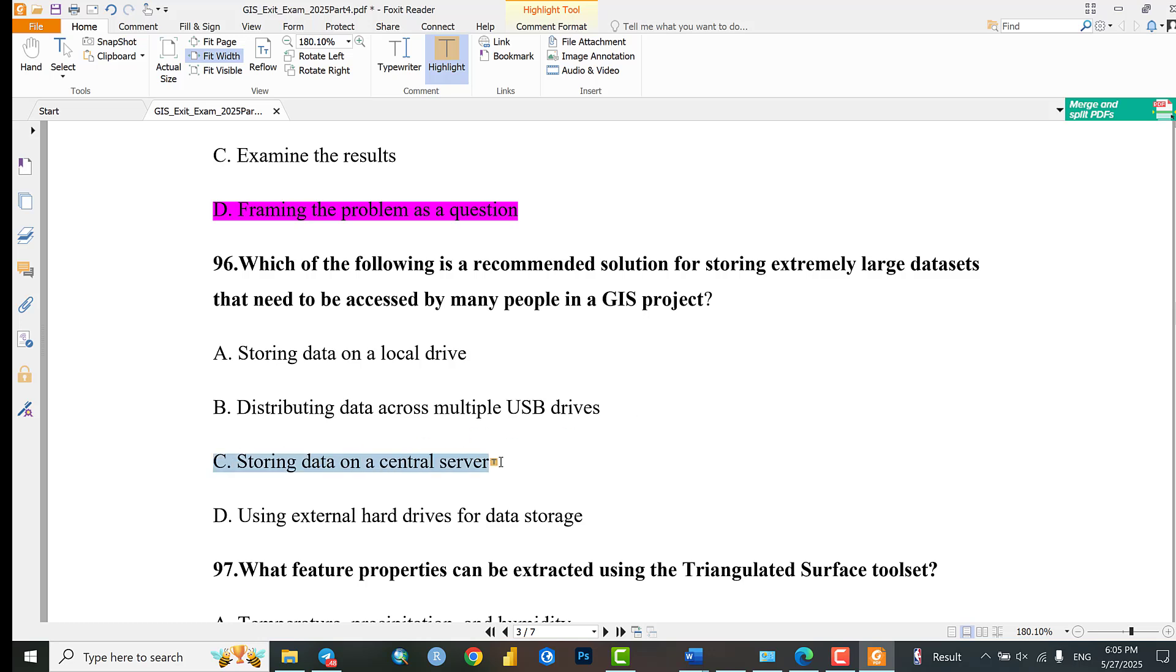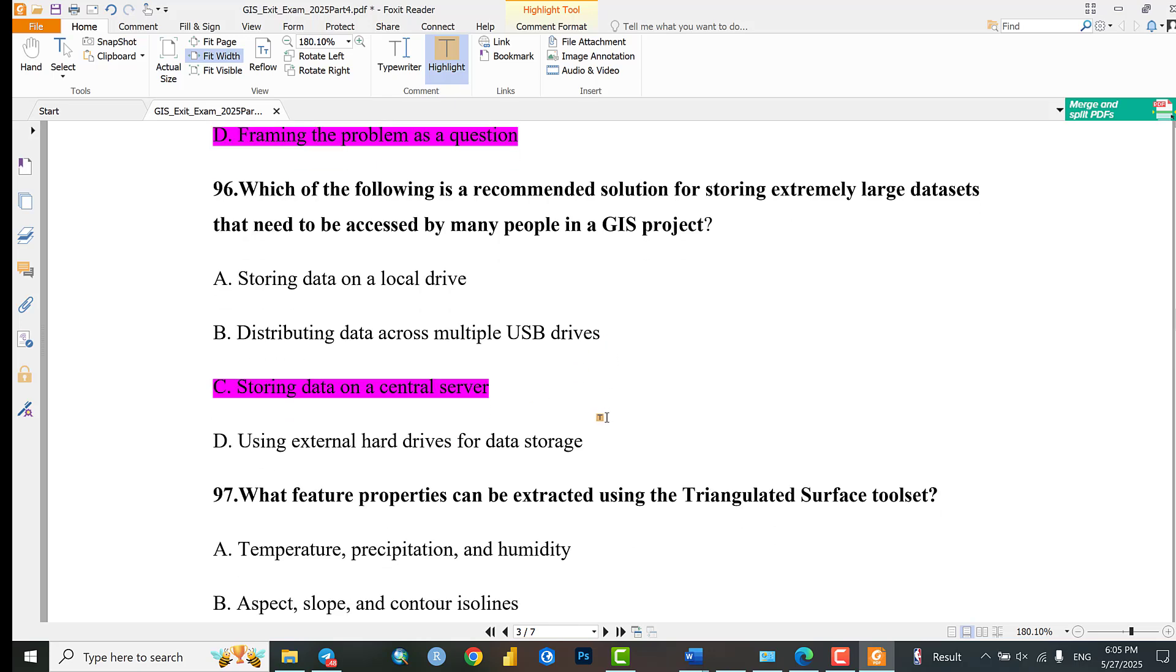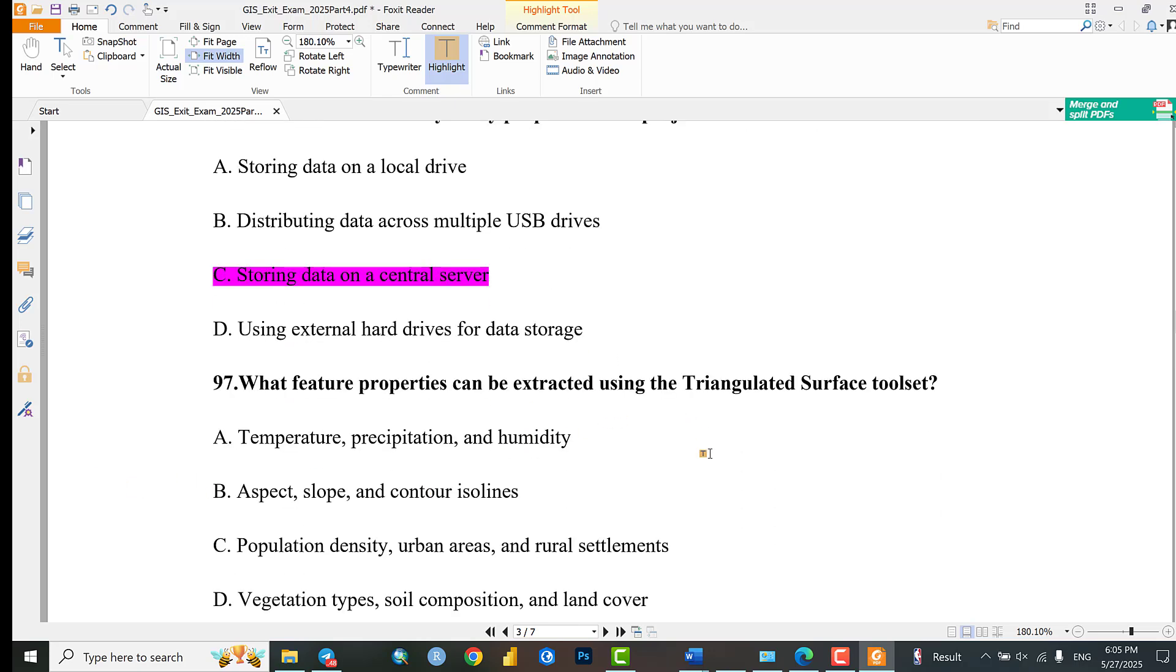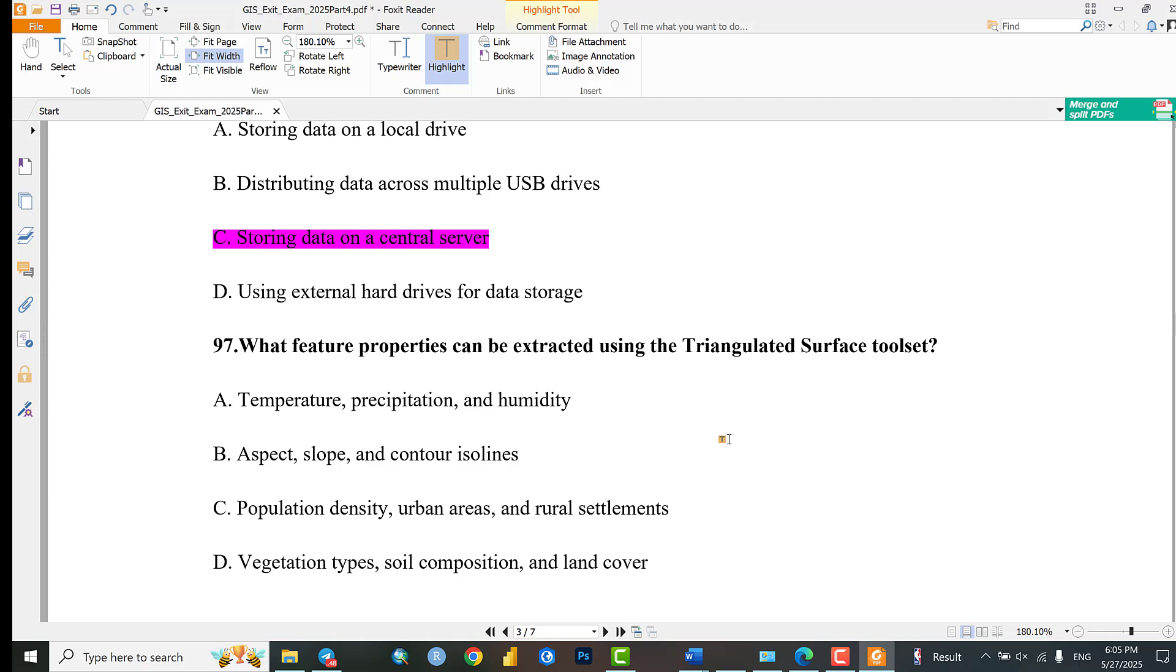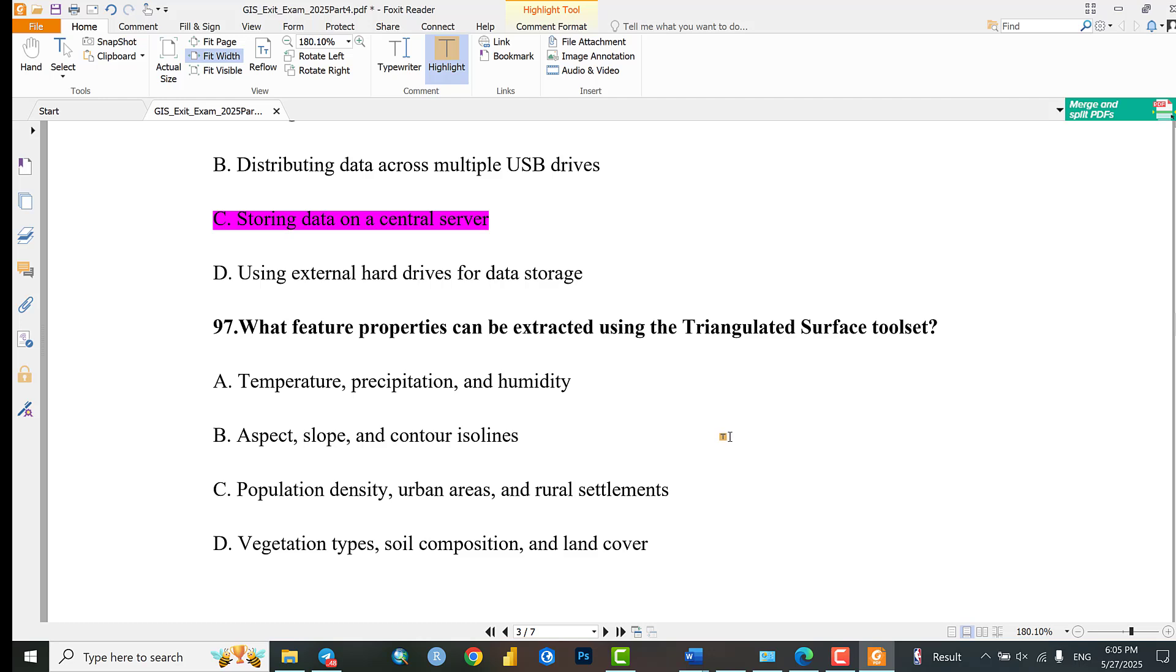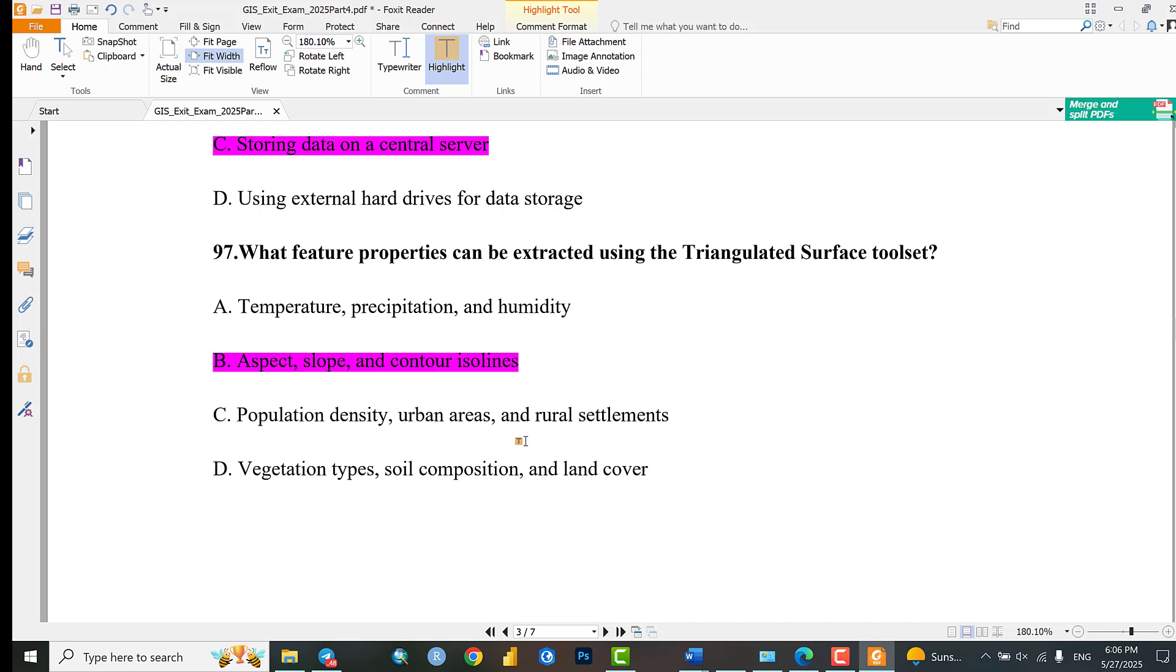Question 97: What feature properties can be extracted using the triangulated surface tools? Options include temperature, precipitation, humidity, aspect, slope, contours, isoLines, population density, urban areas, vegetation, soil composition, and land cover. The answer is aspect, slope, and contour isolines.